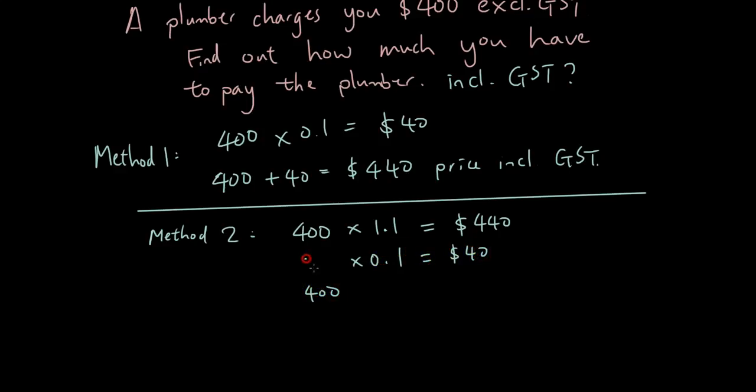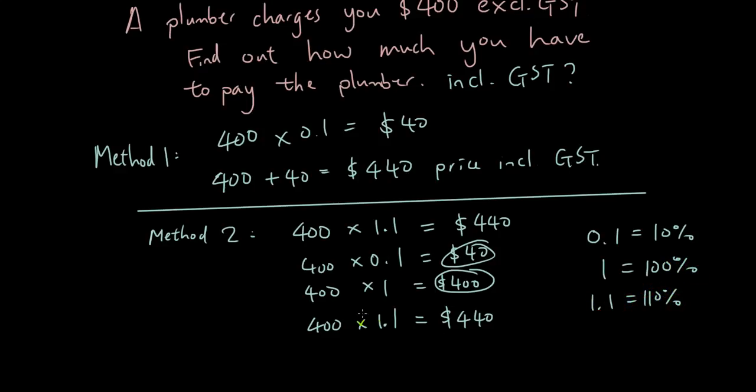If you multiply 400 by 1 you get $400. So when you multiply 400 by 1.1 that includes the 1 which includes the 400. So when you times it by 1.1, the 440, the 40 gets added, gets included in the 400 or added to the 400. So it'll be 440. You can also think of it as a percentage. So 0.1 is the same thing as 10%. 1 is the same thing as 100%. 1.1 is 110%. So when you multiply by 1.1 you're finding 110%.